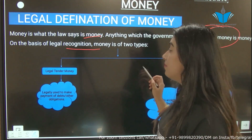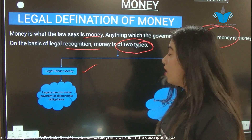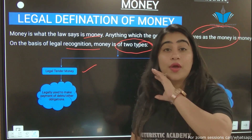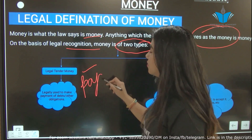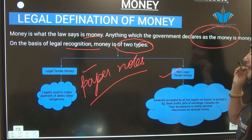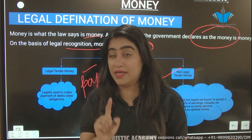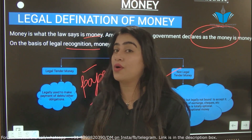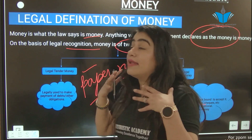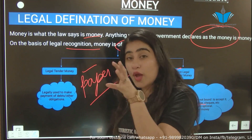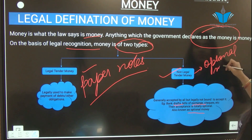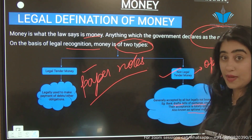On the basis of legal recognition, money is of two types: legal tender money and non-legal tender money. Legal tender money is legally used to make payments — no one can refuse to accept it — for example, paper notes. Non-legal tender money is accepted by all but people are not legally bound to accept it. Examples include bank drafts, bills of exchange, cheques, and overdraft. Its acceptance is totally optional, which is why non-legal tender money is also known as optional money.